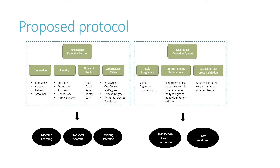The multi-bank detection system is in charge of evidence collection and analysis from a more extensive network, which requires the input from different banks in a secure and encrypted manner, which forms a criteria-based cluster and performs social network analysis to detect money laundering activities on a broader scale.